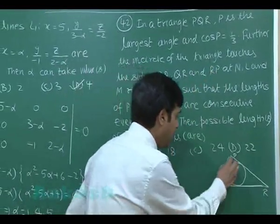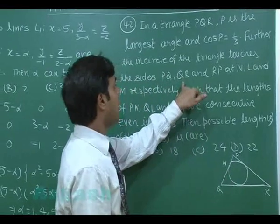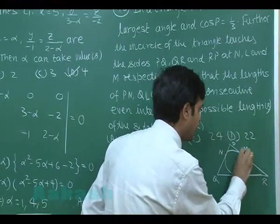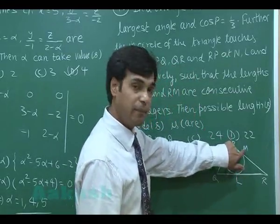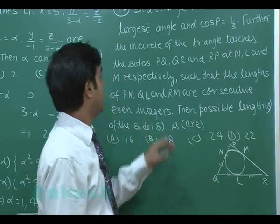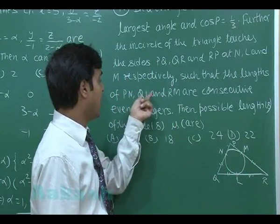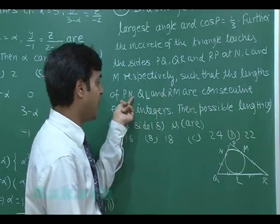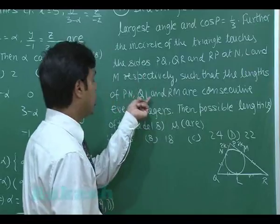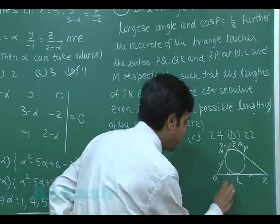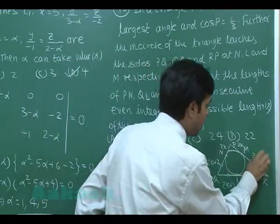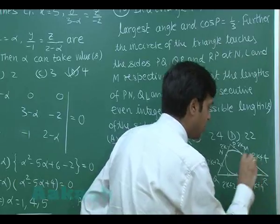Incircle in triangle PQR. P is the largest angle. The incircle touches the sides PQ at N, QR at L, and RP at M. We know that PN equals PM. Similarly, these two are equal. It is given that the lengths of PN, QL, and RM are consecutive even integers. So let's say PN is 2k. Length QL is 2k+2. Length RM is 2k+4.